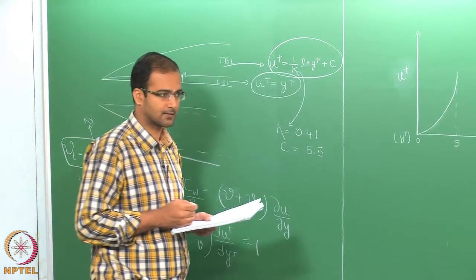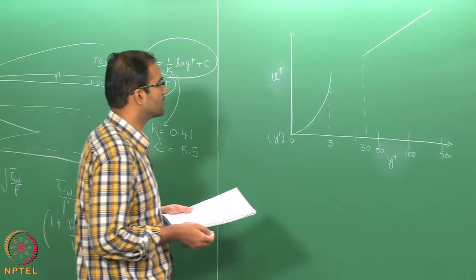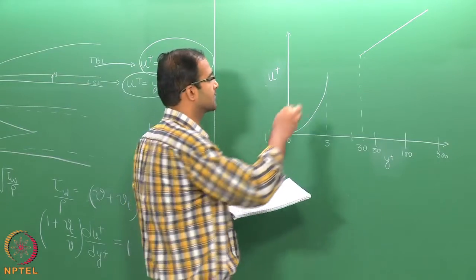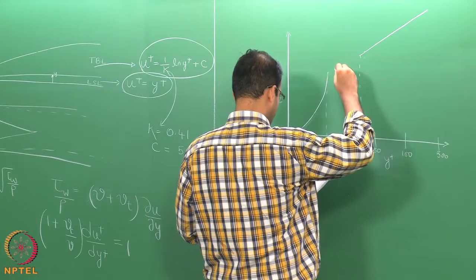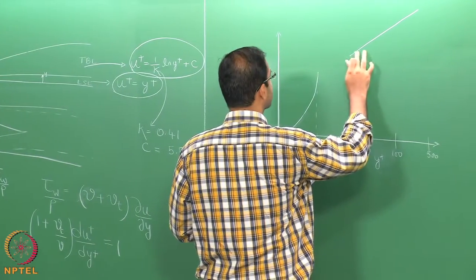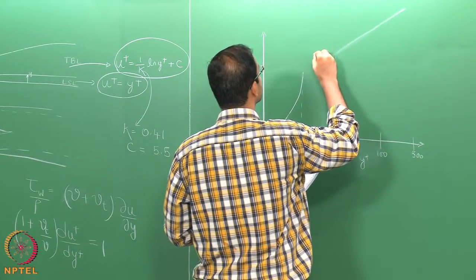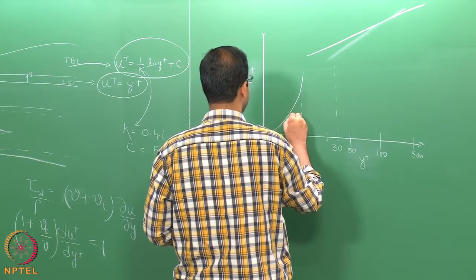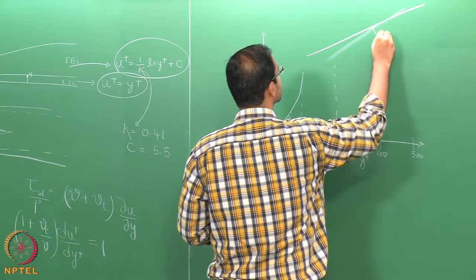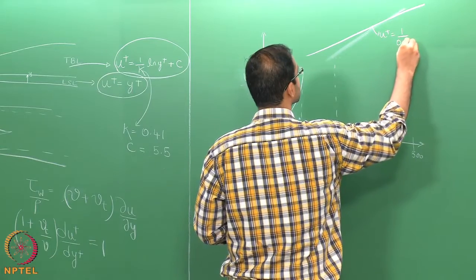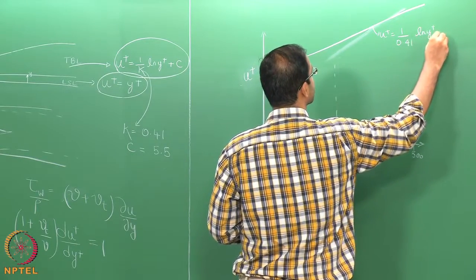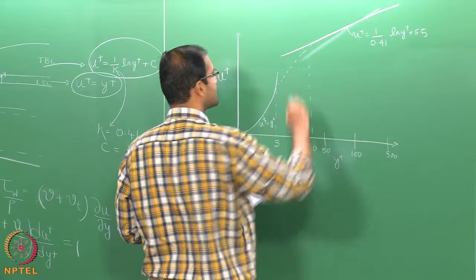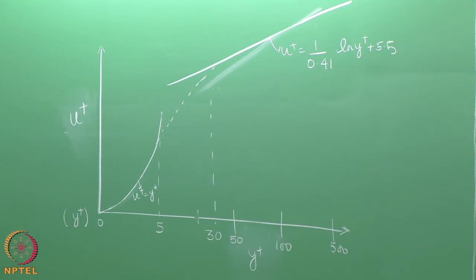In order to patch this, von Karman — himself a student of Prandtl — used a simple empirical correlation to ensure a smooth transition from the laminar sublayer region to the fully turbulent boundary layer region. The slope in the log layer comes out in a certain way. So u+ = y+ represents the linear law, and u+ = (1/0.41) ln(y+) + 5.5 is the log law. To patch between them, von Karman introduced an intermediate layer — a buffer layer.